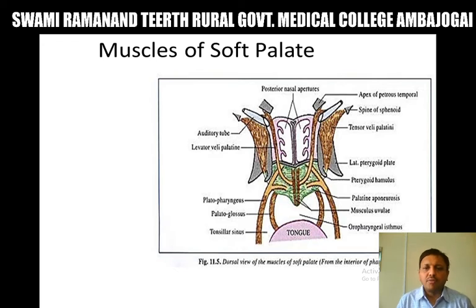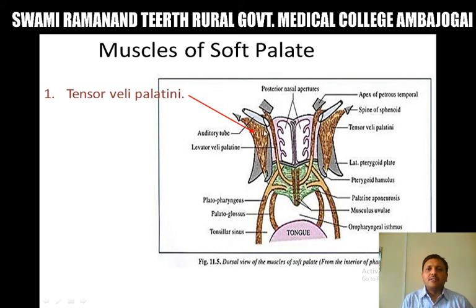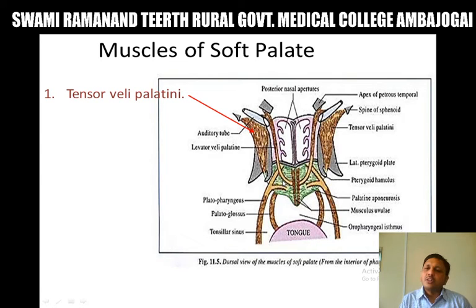Muscles of the soft palate are: tensor veli palatini, levator veli palatini, palatopharyngeus, palatoglossus, and musculus uvulae. The tensor veli palatini is a flat triangular muscle. It originates from the lateral side of the auditory tube and the spine of the sphenoid. It converges to form a tendon which winds around the pterygoid hamulus and flattens out to form the palatine aponeurosis, finally attaching to the posterior border of the hard palate.